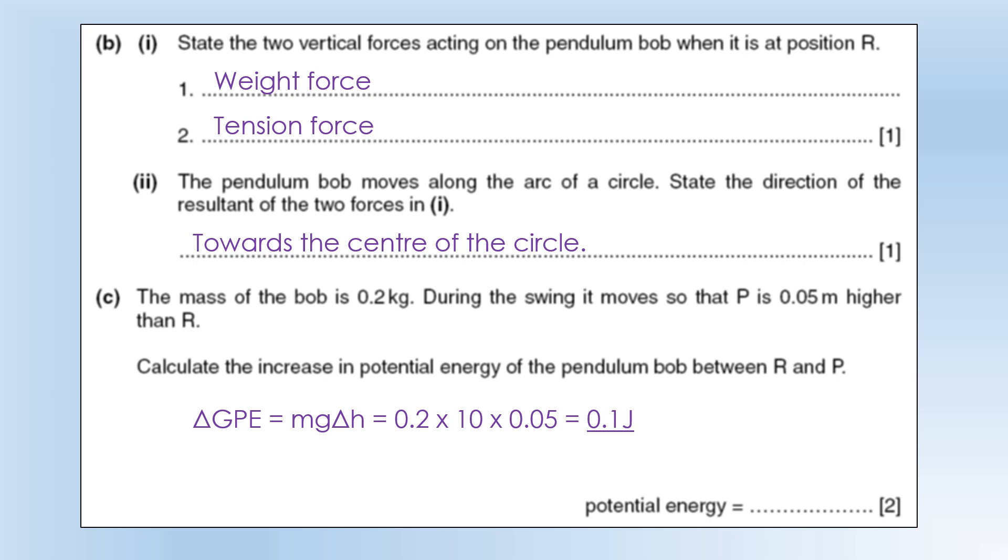Okay so change in gp is just mg times the change in height. So it's going to be 0.2 the mass times the gravitational field strength 10 times 0.05 meters giving us 0.1 joules of energy.